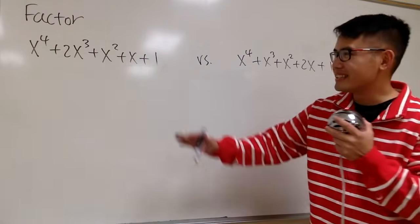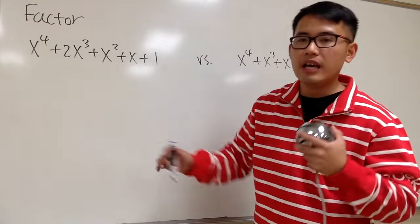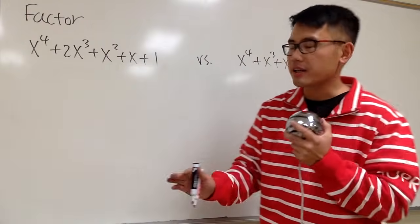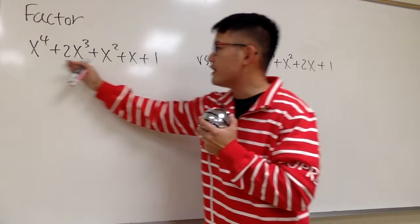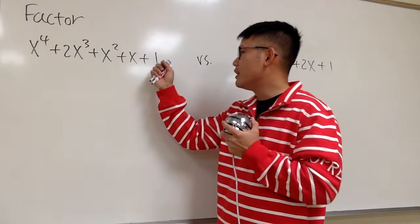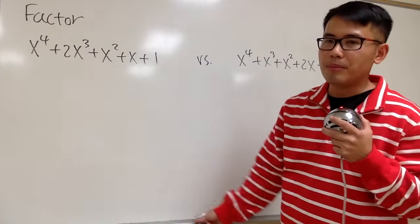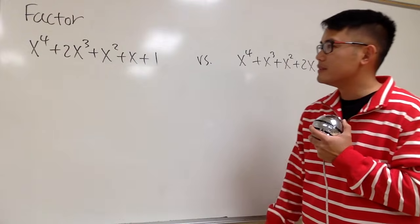Anyways, let's focus on this one first. As you can see, we have 5 terms. As a good habit, we should check to see if we can factor any GCF from all these terms. But no, because first of all, the last one is just a 1, and then for the numbers, there's no other number besides 1. So no GCF.